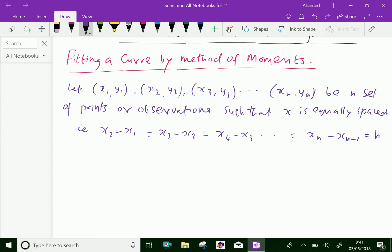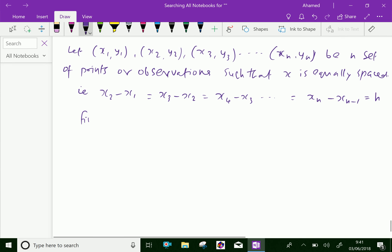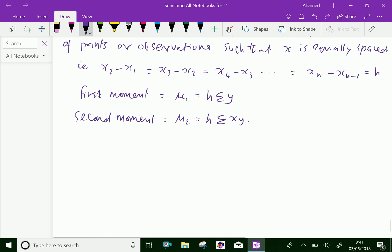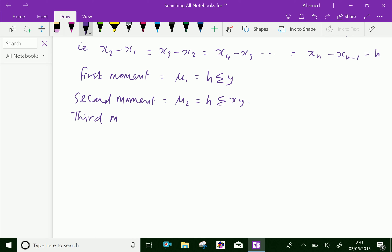Now, we define the moments of observations for values of y as follows. The first moment μ₁ = h∑y. The second moment μ₂ = h∑xy. The third moment μ₃ = h∑x²y, and so on.